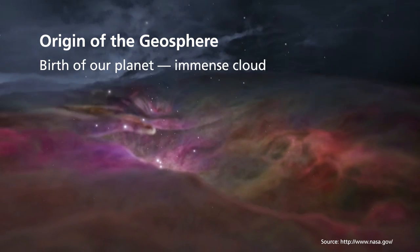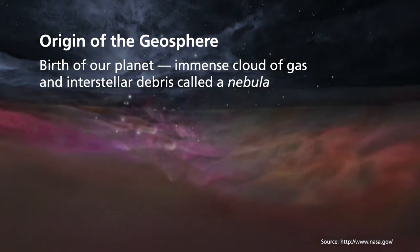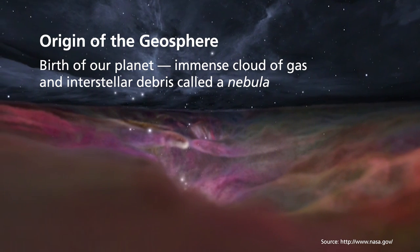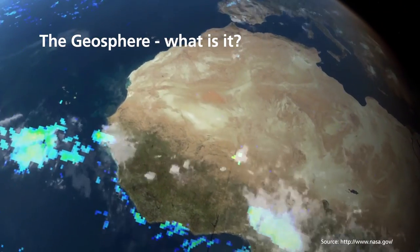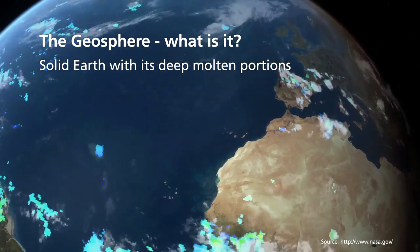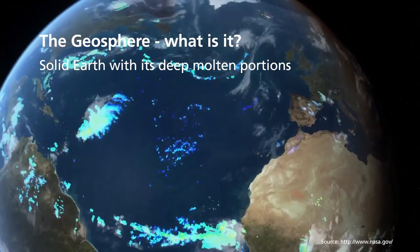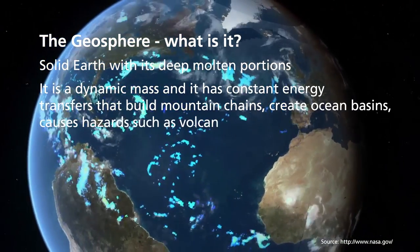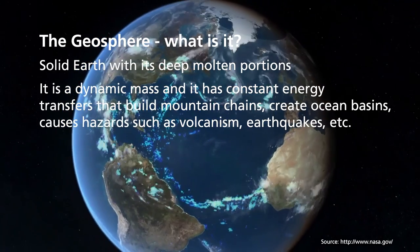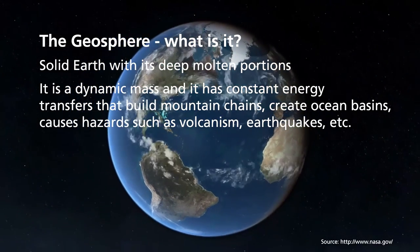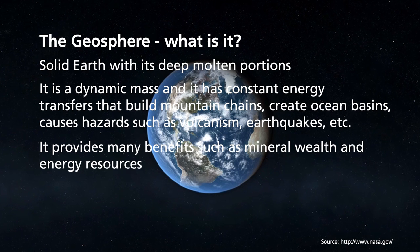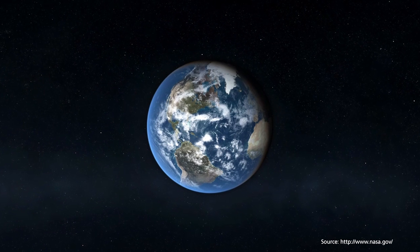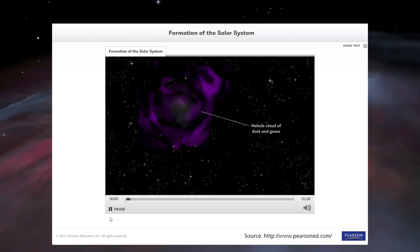The origin of the geosphere is basically the birth of our planet from an immense cloud of gas and interstellar debris called a nebula, shown here in the picture. The geosphere — what is it? It is solid Earth with its deep molten portions. Is it a static or non-moving mass? No, it's dynamic — there is constant energy transfer that builds mountain chains, ocean basins, and such hazards as volcanoes and earthquakes. It also provides many benefits such as mineral wealth and energy resources.